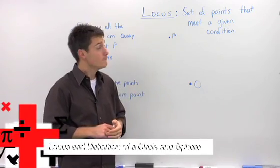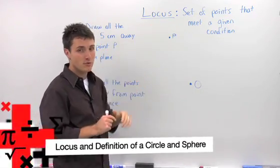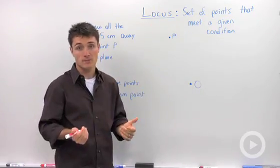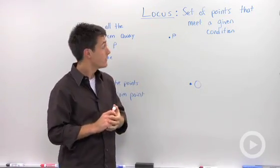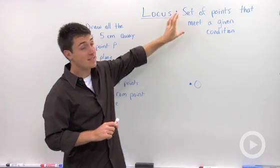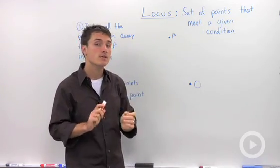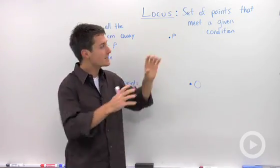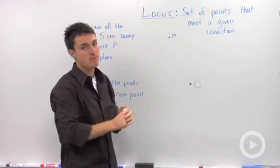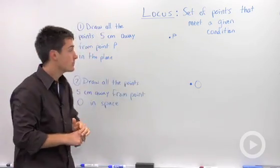A term in geometry that is a little bit confusing is locus. Now we're not talking about one of the plagues here. We're talking about a set of points that meet a given condition. So to examine what this means, let's look at two examples.